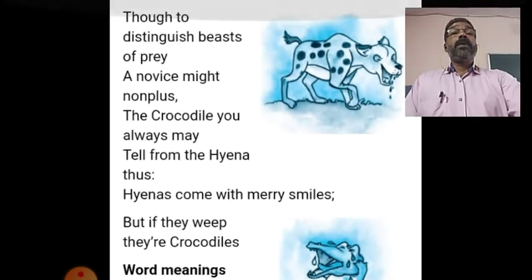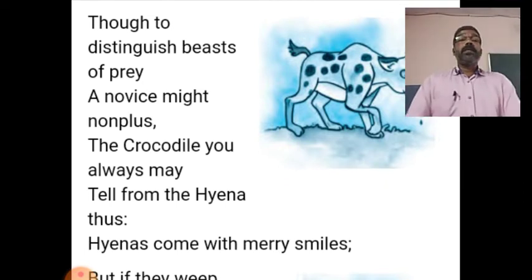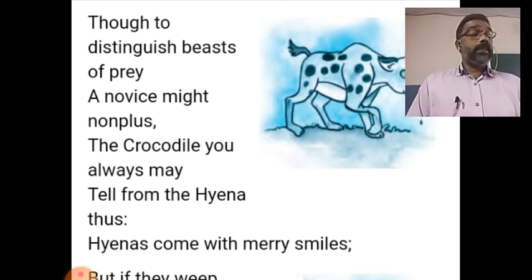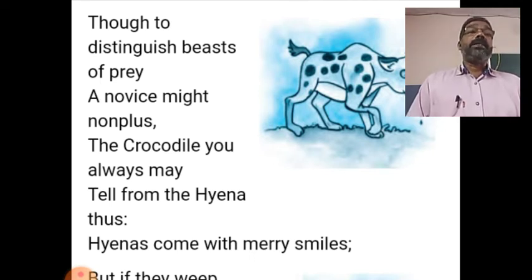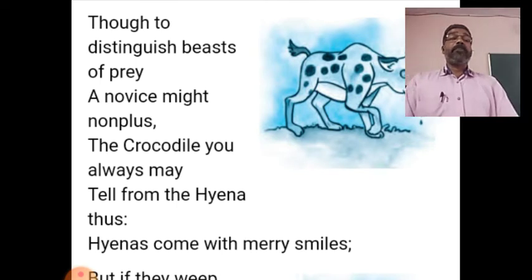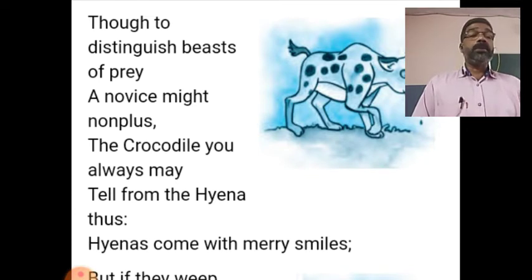The poet continues to introduce the wild animals. In this stanza the poet introduces to the readers the hyena and crocodile. Both the animals are beasts of prey — that means they hunt animals and eat them. When you see a hyena or a crocodile, beginners, those who do not know much about animals, may be confused.